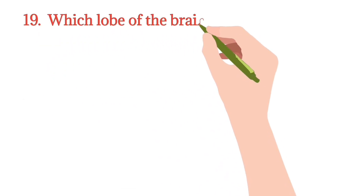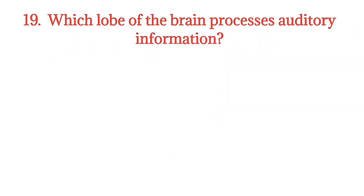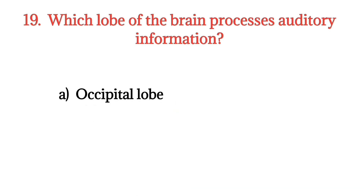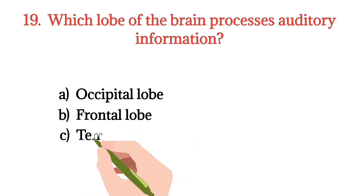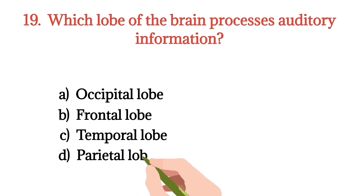MCQ number 19. Which lobe of the brain processes auditory information? Option A: Occipital lobe. Option B: Frontal lobe. Option C: Temporal lobe. Option D: (not stated). The right option is Option C.